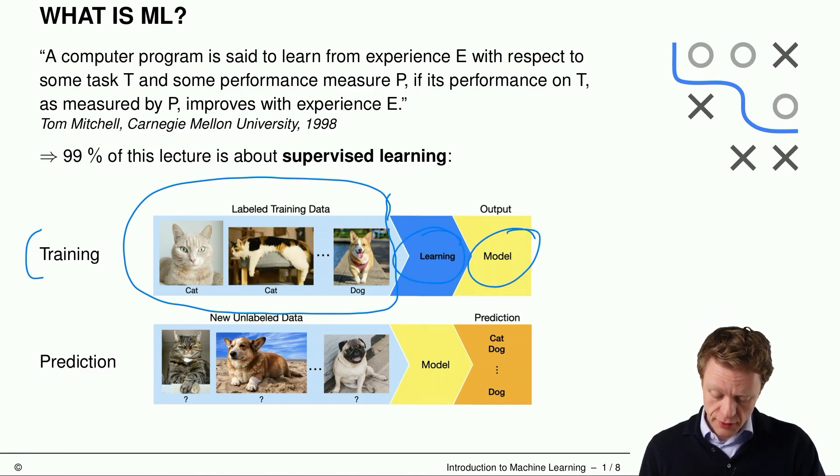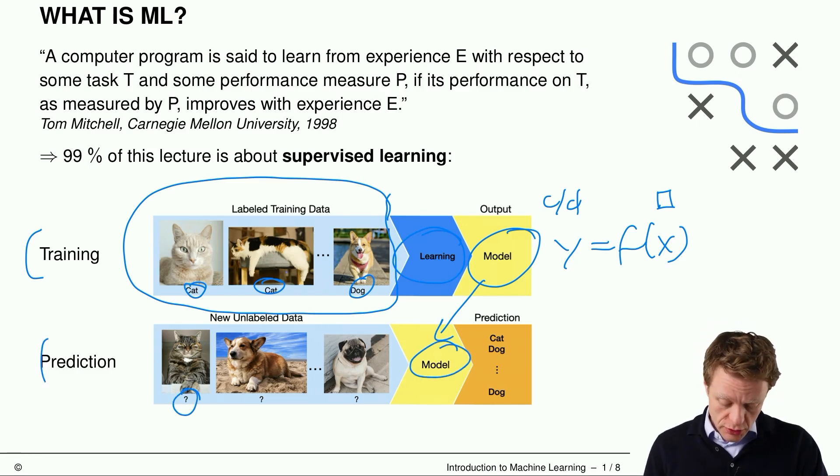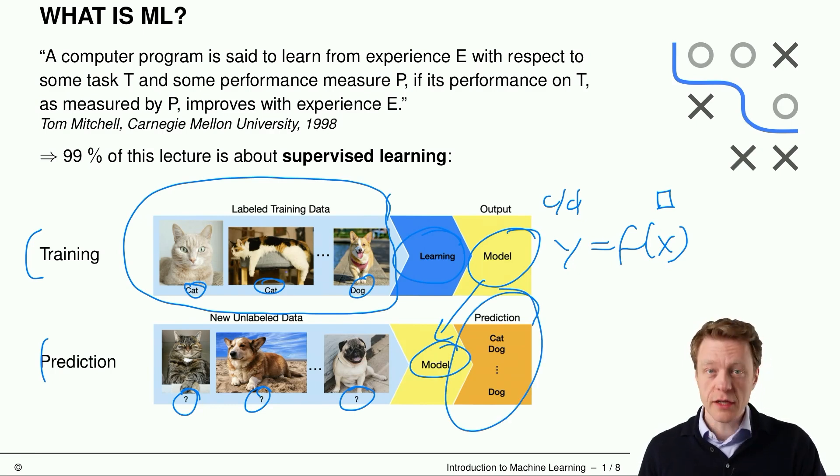So machine learning tries to find a model. Usually we say y is f of x where x is the input or feature and y is the output or target. And in this case x is just an image. And y is the class, is it a cat or is it a dog. So during training we have labelled data which means we know the true target. And if we have that model we can make use of this during prediction where we do not know the true target. So we don't know if it's a cat or a dog. We only have the image and with this model we try to predict the correct class.